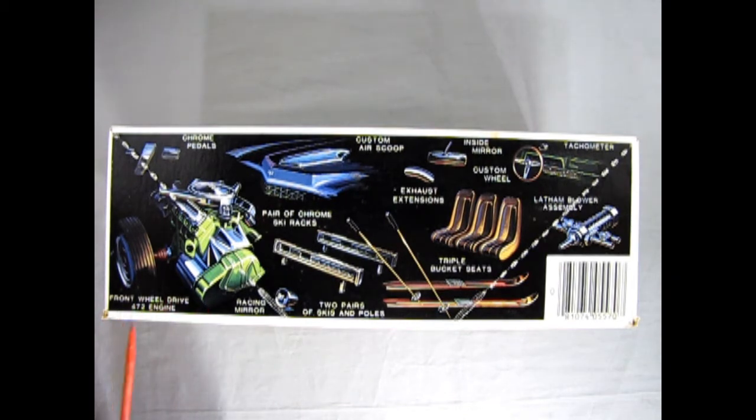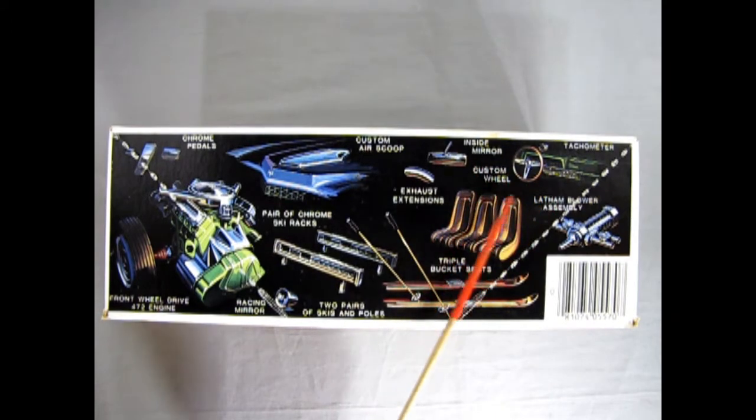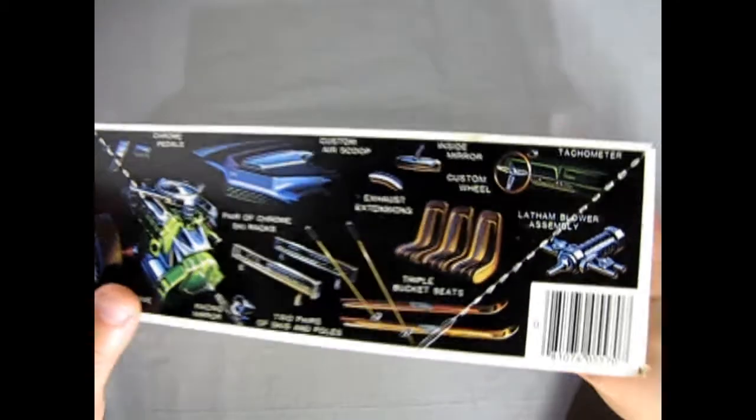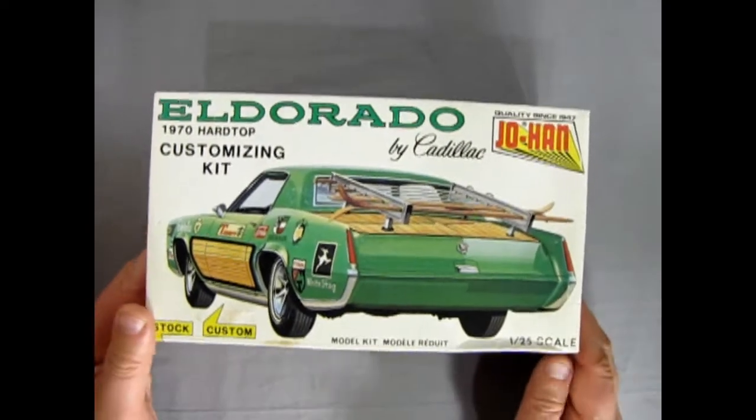Now this is a later re-release because you can see the barcode - the originals wouldn't have had the barcode because that came out in the mid 70s I guess. Here we have a front wheel drive 472 cubic inch engine, chrome pedals, racing mirrors, pair of chrome ski racks, two pairs of skis and poles, triple bucket seats, a Latham blower assembly, a tachometer, inside mirror, custom wheel and exhaust extensions, and a custom air scoop. All these cool little parts in here getting all rattled around.